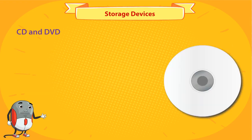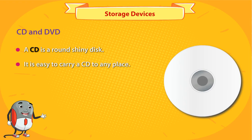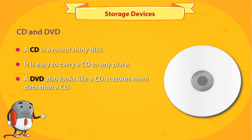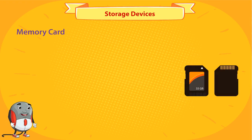CD and DVD: A CD is a round shiny disk. It is easy to carry a CD to any place. A DVD also looks like a CD. It stores more data than a CD.